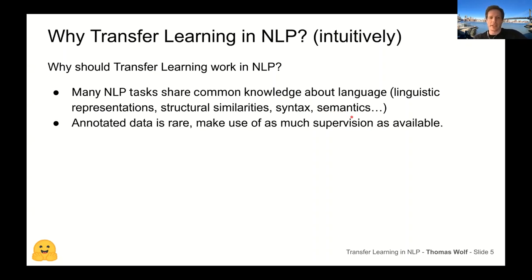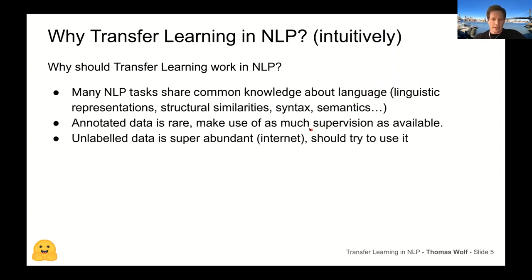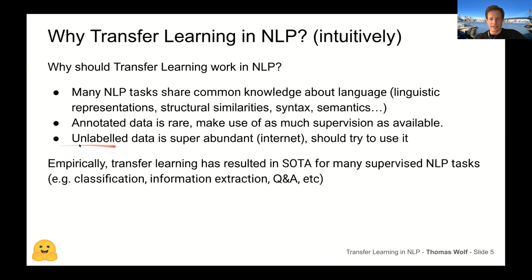Another good reason to use transfer learning is that annotated data is rare. If you can combine datasets from several tasks, you get more data, which is usually much better for machine learning models. We can also use unlabeled data, which is very cheap — you don't have to annotate it — and it's super abundant because we have the internet where people are posting huge loads of text everywhere.